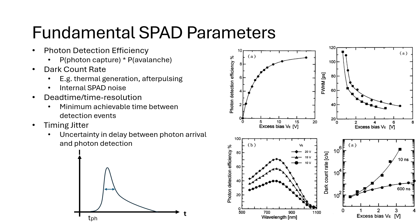Now that we have reviewed the fundamental components of the SPAD device, let's look at the key parameters dictating its performance. Photon detection efficiency is essentially the combined probability of a photon both being absorbed and triggering an avalanche. The dark count rate is the measure of intrinsic noise sources — the rate of spikes triggered by non-photon sources, mainly thermally generated carriers or after-pulsing. The dead time and time resolution of the SPAD dictates the minimum achievable time between detection events, limiting the frequency performance. And timing jitter refers to the uncertainty and delay between a photon's arrival and its detection, as indicated by the full width half maximum of an average detection spike.